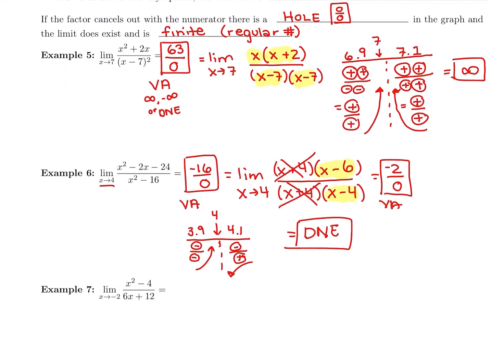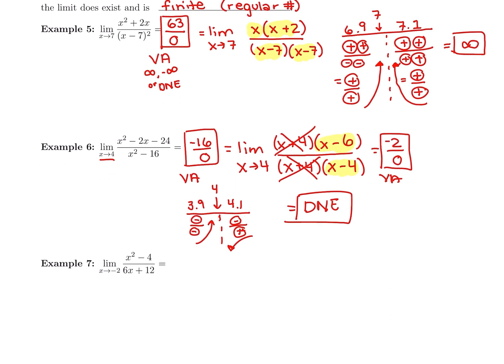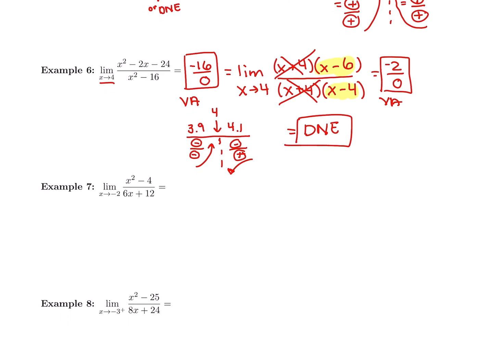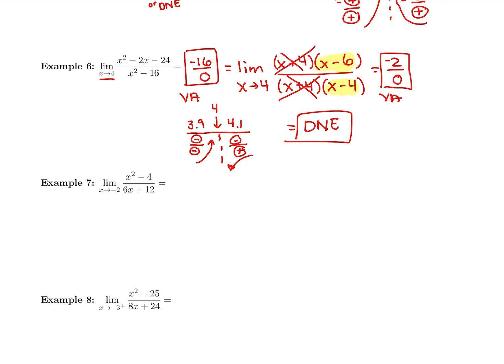Let's try those three steps again on a new example. Plug in negative 2: negative 2 squared is 4, minus 4 is 0 in the top. Then 6 times negative 2 plus 12 is 0 in the bottom. We have a 0 over 0 case — that's a relief. That means we have a hole, which means factoring should give us our final answer.